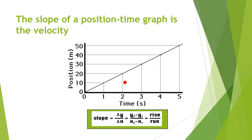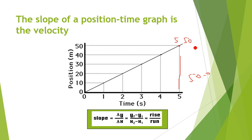So the slope equals Δy divided by Δx, which is (y₂ − y₁) divided by (x₂ − x₁). The final position has x-coordinate 5 (time) and y-coordinate 50 (position). The initial time is 0 and initial position is 0. So velocity equals (50 − 0) divided by (5 − 0), giving 50 divided by 5, which equals 10 meters per second. This is the slope of the line and the velocity of the object.